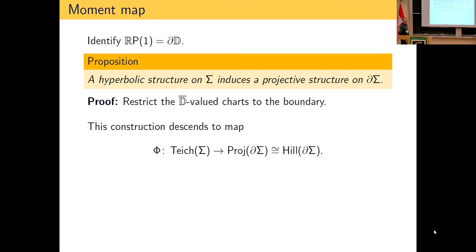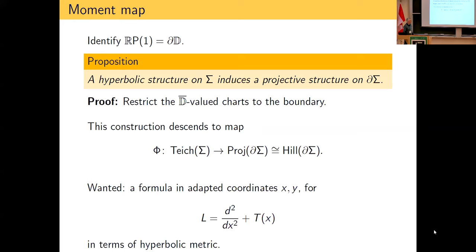You might be dissatisfied with this indirect description. If you think of Teichmüller space as equivalence classes of metrics and think of Hill operators really as Hill operators, you want a formula. Using coordinates x, y as above, it's an exercise to work it out. The answer is: write the metric in local coordinates; the volume form goes like 1/y² and picks up a function a(x), and we look at the geodesic curvature of the horizontal lines y = const.